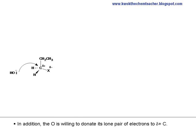In addition, the oxygen is willing to donate its lone pair of electrons to the delta plus carbon. The nucleophile attacks the back of the C-X bond. This facilitates X minus to leave.